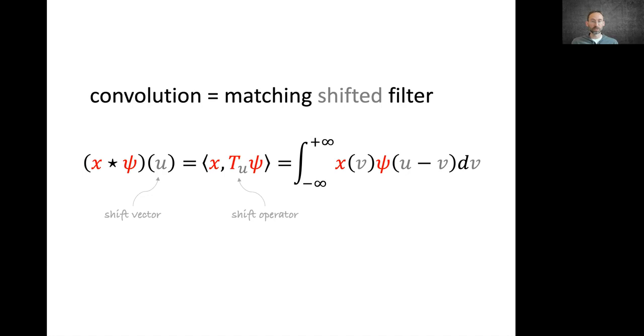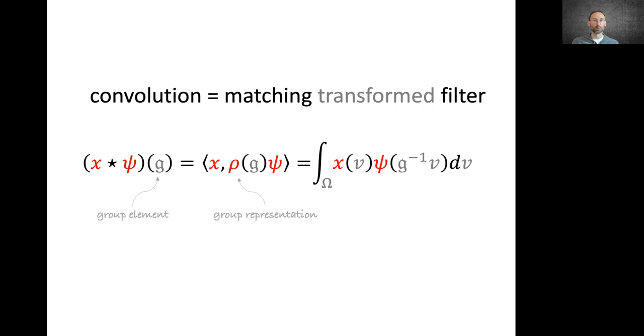There is a very special thing here is that the translation group can actually be identified with the domain itself. Each element of the group, which is a shift, can be represented as a point on the domain to which we shift. This is not the general case. In general, we'll have the filter transformed by the representation of our group that I denote by ρ. The convolution, or the group convolution will now have values for every element of the group G. The structure of this group can be very different from the structure of the domain.